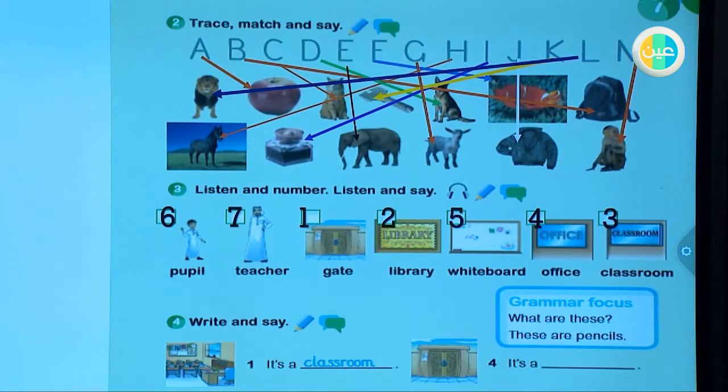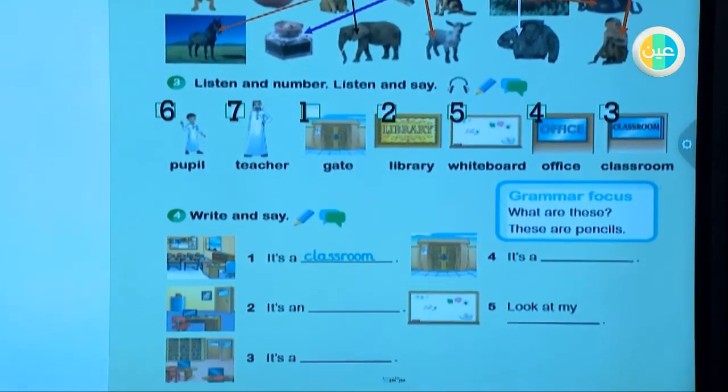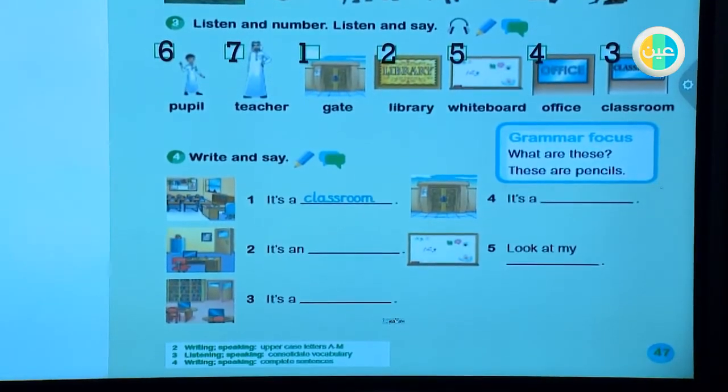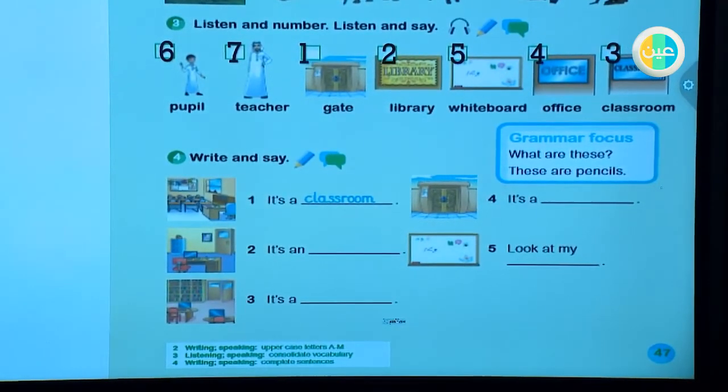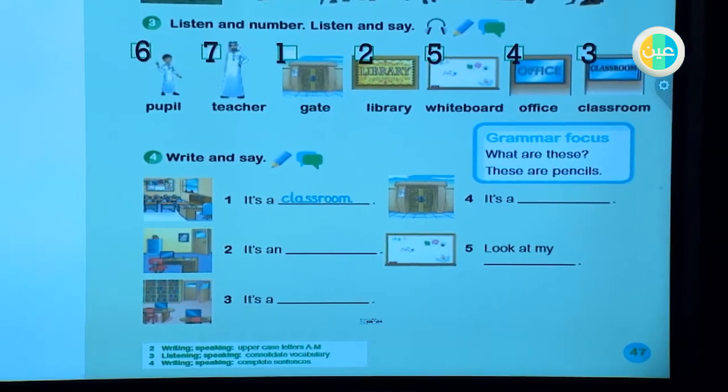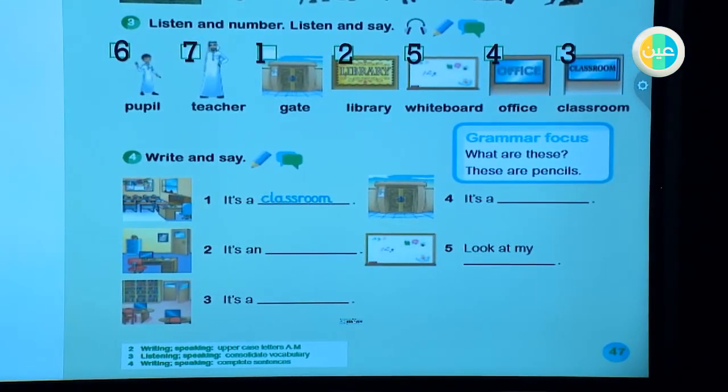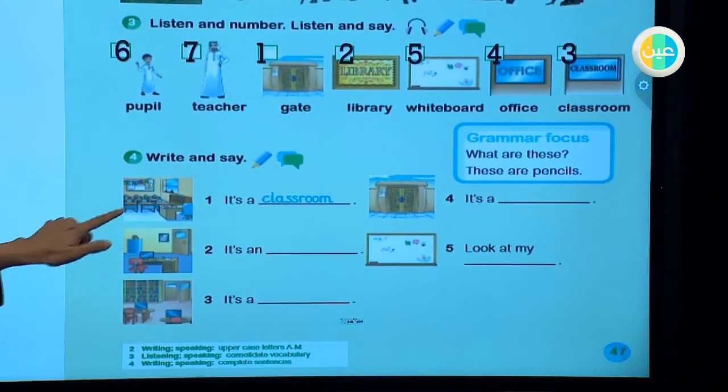Now, my dear student, here we are going to write and say. Look at the first picture. What can you see? Excellent, it is a classroom. Here in classroom, what do we have? Excellent, desks, chairs, excellent, office. Can you tell me how many chairs? If I say how many, you give me what? Number. Excellent, just count. How many? It's about ten chairs.